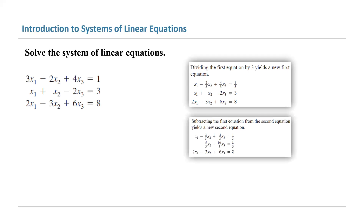Now, what are we going to do? We're going to subtract the first equation from the second equation to create the new second equation. Subtracting gives us the following: we get rid of variable x1 because x1 disappears. But x2 becomes 5 over 3 times x2, and x3 becomes negative 10 over 3 times x3. On the right-hand side, you have 3 minus a third, which becomes 8 over 3. The last equation stays the same.